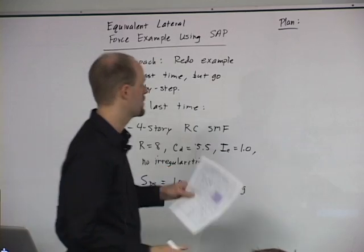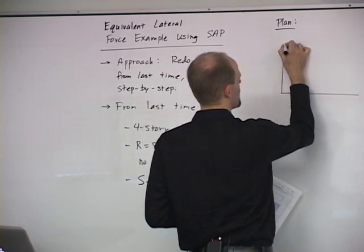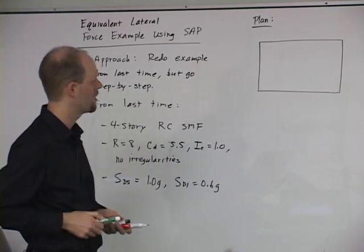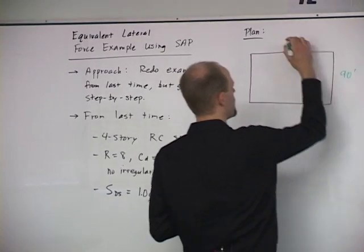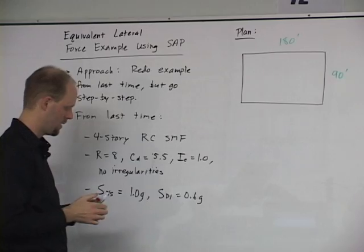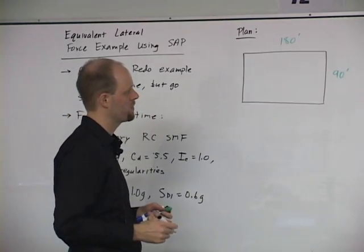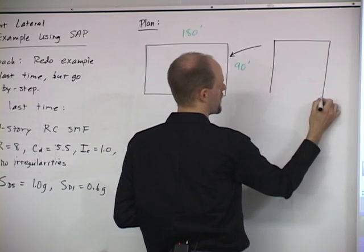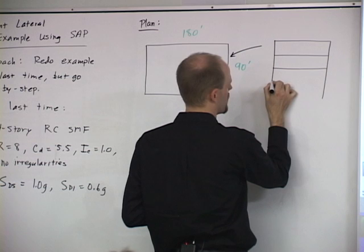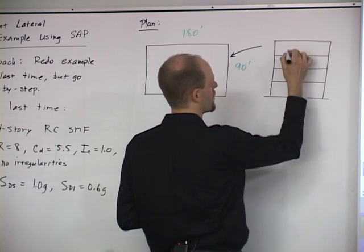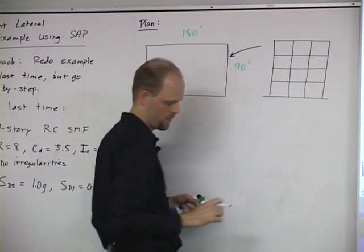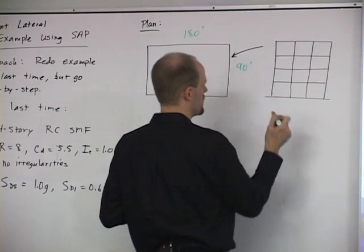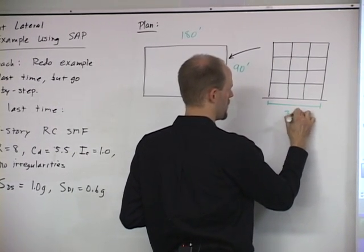Just so we have it all in our notes — the plan view is 90 feet by 180 feet. And we're going to do a perimeter frame, so just frames around the perimeter. If we look at this frame, it's a four-story, three-bay frame. The bay widths are three at 30 feet each.